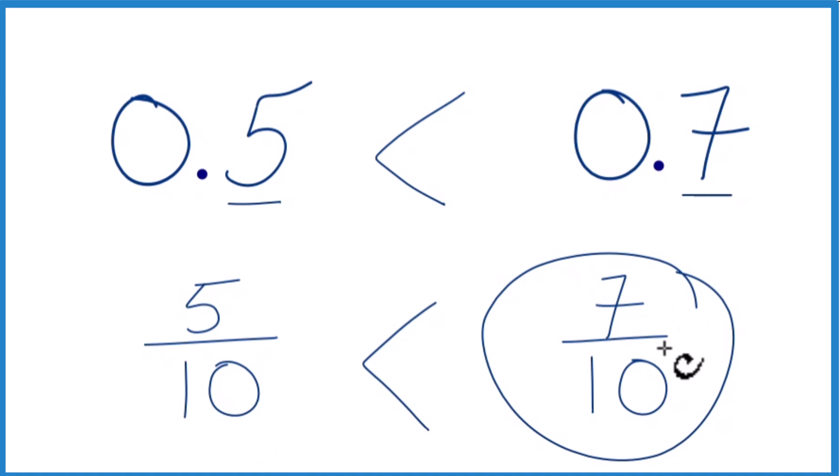0.7, since these are the same value, they're equivalent. 0.7, that's greater than 0.5.